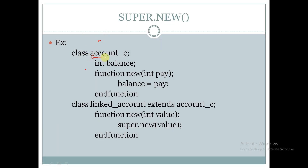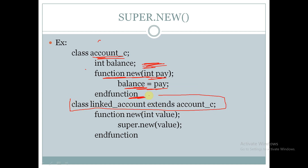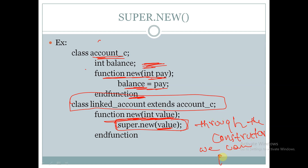Let us see another example. Here we take a class called account_c with a declared property and a method called new, which has an argument called pay of int data type, and we assign balance equal to pay. We then derive a class called linked_account from account_c. In this derived class, we have a method called new with an argument called value of int data type, and here we call super.new(value). Through the constructor we are passing the argument value to the base class.